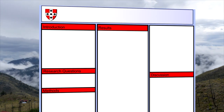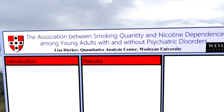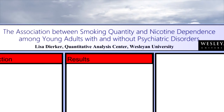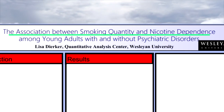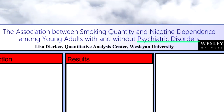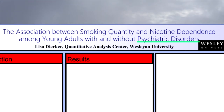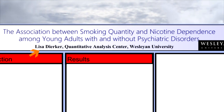The final title for our sample project is 'The association between smoking quantity and nicotine dependence among young adults with and without psychiatric disorders.' Here you can see that we describe the association we're looking at, the sample — that is, young adults — and also the third variables, that is psychiatric disorders, that play an important role in answering our specific research question. Below the title, include your name and where the work was conducted.